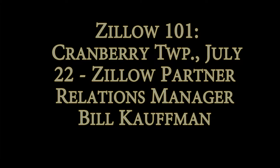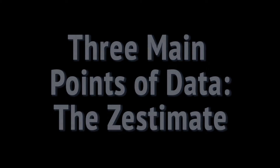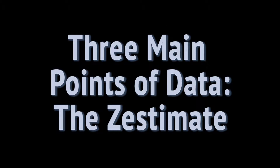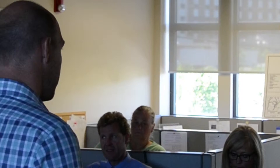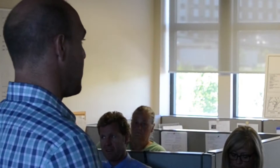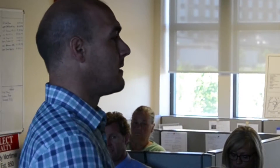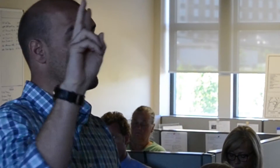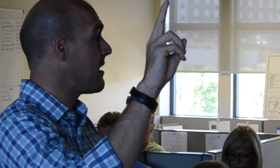There are three main points of data that we're going to pull to create this estimate. The first is going to be the physical attributes of the house — that's your bedrooms, bathrooms, your square footage, things like that. The second is going to be the tax data that we're collecting from the public record.